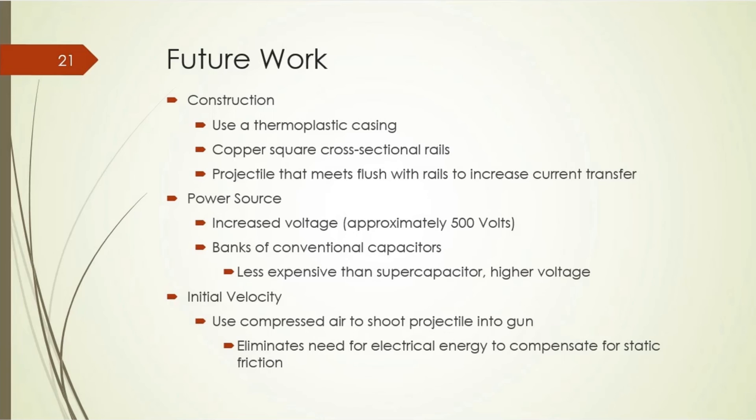Were I to do this again or improve my prototype, I would like to use a thermoplastic casing that I could mold perfectly to what I was desiring to have it as flush as possible, eliminating the distortions from the 2x4. Square cross section copper rails with a copper projectile molded to those rails to decrease the resistance and increase the conductivity. I would use power sources with a much higher voltage. I was working at 15 volts for safety reasons, but I would really prefer to use 500 volts or 1,000 volts. I would use banks of supercapacitors in series and parallel formations to increase the voltage and increase the energy storage, and have initial injection velocities with compressed gas or compressed air for the projectile.